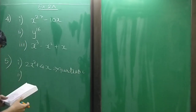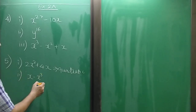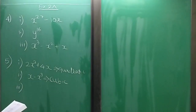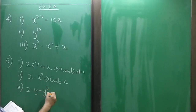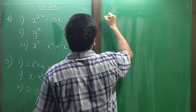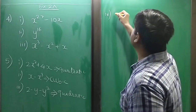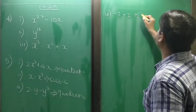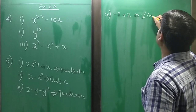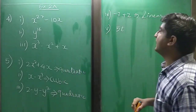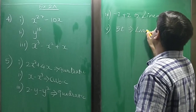Sum 3: 2 minus y minus y squared — degree is 2, so it is quadratic. Sum 4: something minus 7 plus 0 — degree is 1, so it is a linear polynomial. Sum 5: phi t — degree is 1, so it is again a linear polynomial. Sum 6: p cubed — degree of polynomial is 3, so this is a cubic polynomial.